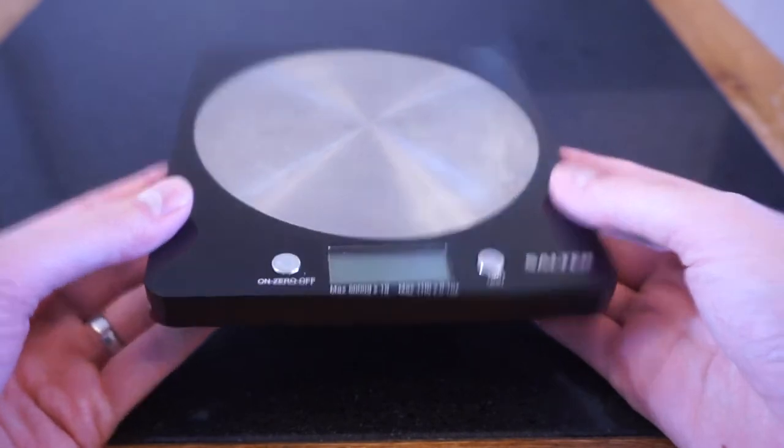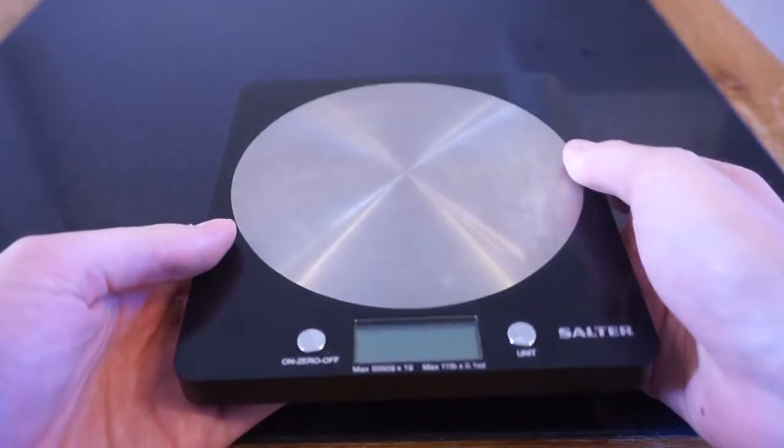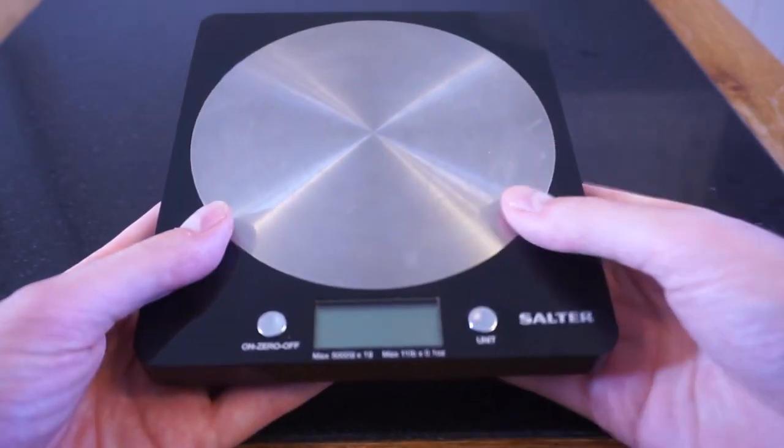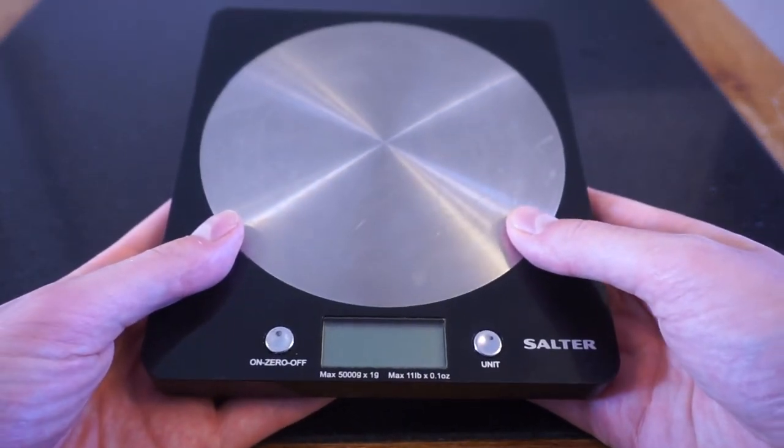So if you're after a super compact, easy to use weighing scales for the kitchen, I highly recommend these Salter ones. Check out the links in the description below to see where you can buy this on Amazon. It's usually available for around the 15 pounds mark.